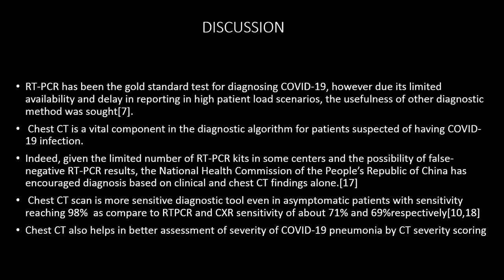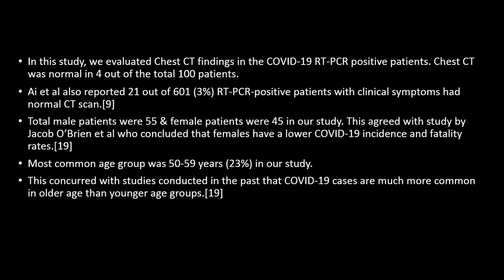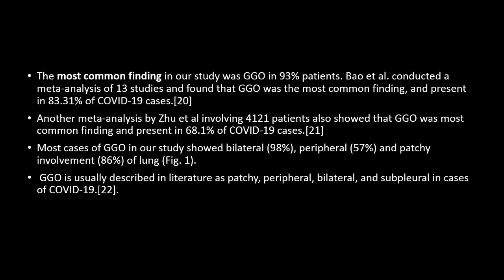In the discussion, RT-PCR is the gold standard test for diagnosis of COVID-19. However, due to its limited availability and delays in reporting under high patient load, the usefulness of other modalities was explored. In our study, we evaluated chest CT findings in COVID-19 RT-PCR positive patients. Chest CT was normal in 4 out of 100 patients. AI et al. also reported 21 out of 600 RT-PCR positive patients with clinical symptoms had a normal CT scan. GGO is the most common finding; Bao et al. found GGO in 83% of COVID-19 cases, and a meta-analysis involving 4,121 patients showed GGO in 68% of COVID-19 patients, mostly with bilateral peripheral and patchy lung involvement.